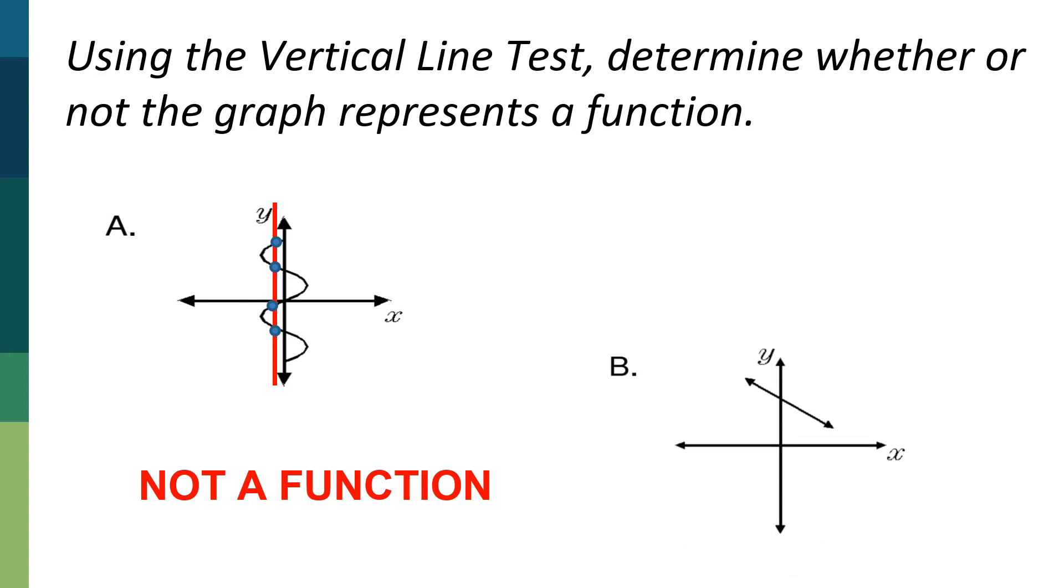On the other hand, for letter B, if we're going to draw a vertical line, how many times did it intersected with the given graph? It's just 1. So this one can be classified as a function. Did you get it?